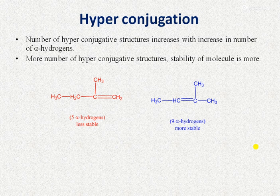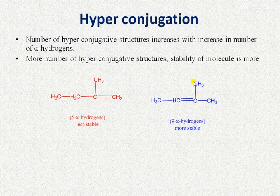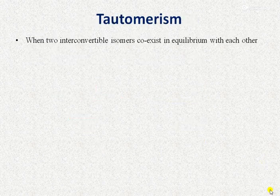For example, comparing 2-methyl-1-butene and 2-methyl-2-butene: 2-methyl-1-butene has five alpha hydrogen atoms giving five hyperconjugated structures, while 2-methyl-2-butene has nine alpha hydrogen atoms giving nine hyperconjugated structures. Therefore, 2-methyl-2-butene is more stable.